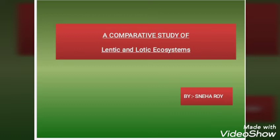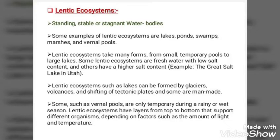First is the lentic ecosystem — standing, stable, or stagnant water bodies. Some examples of lentic ecosystems are lakes, ponds, swamps, marshes, and vernal pools. Lentic ecosystems take many forms, from small temporary pools to large lakes. They can be formed by glaciers, volcanoes, and shifting of tectonic plates, and some are man-made. Some such as vernal pools are only temporary during a rainy season.